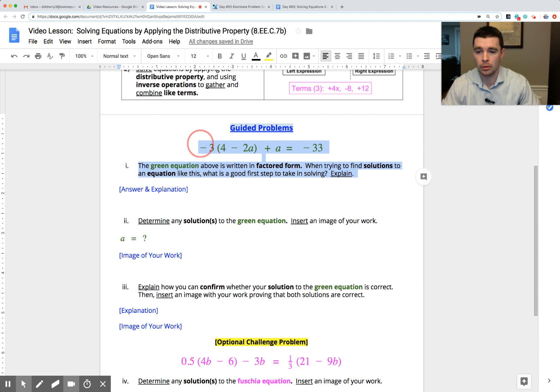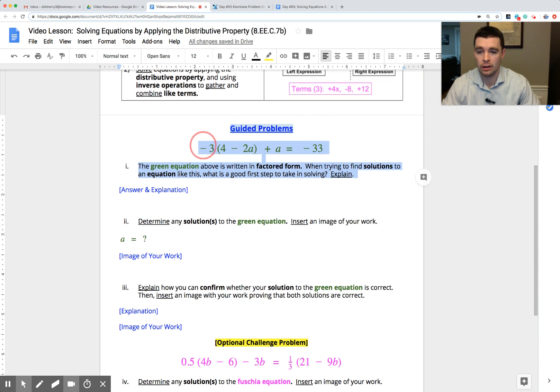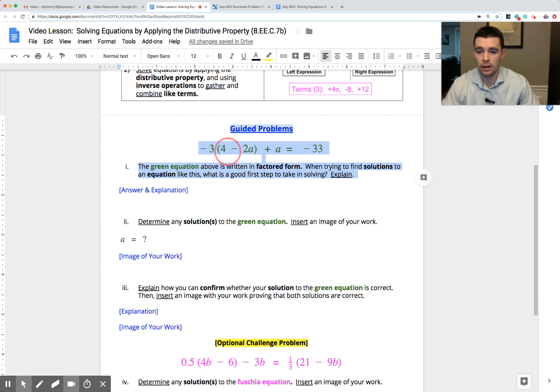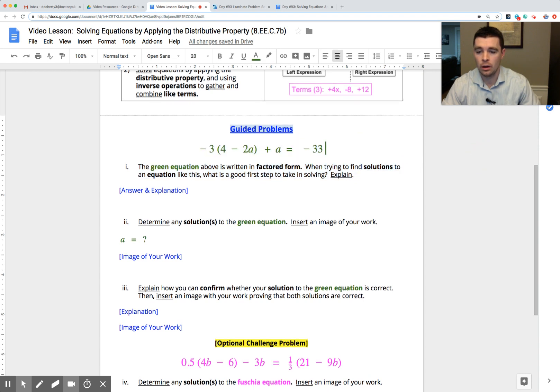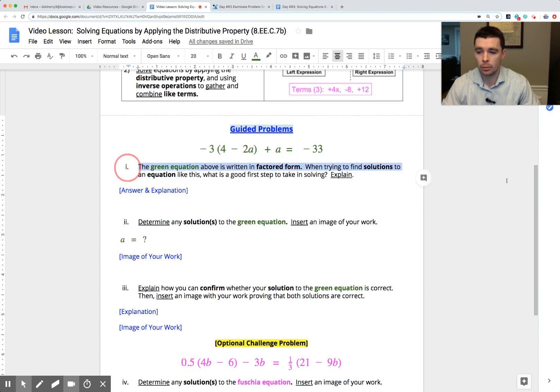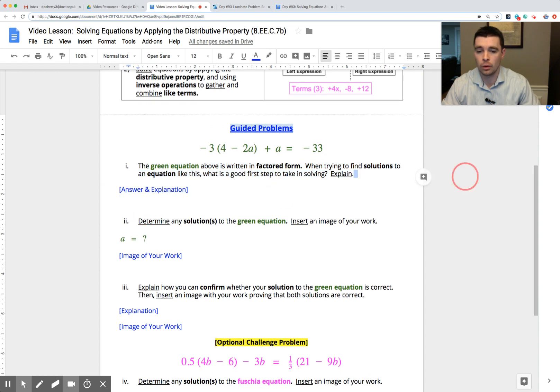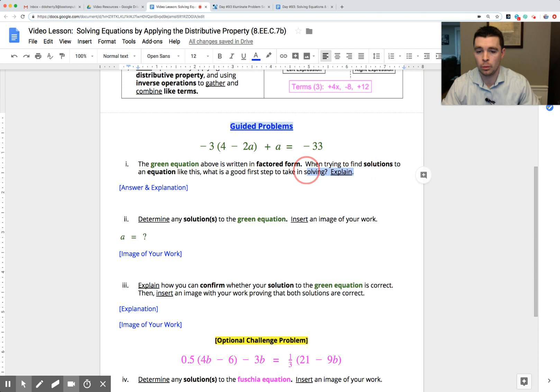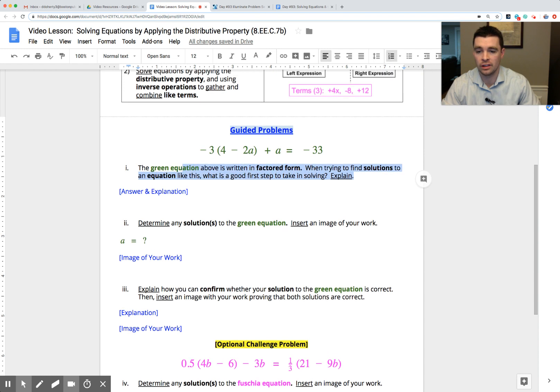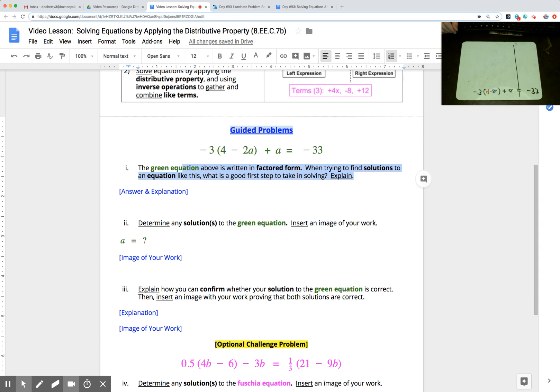So first problem today, a bit more complicated but we're ready for that: negative 3 times (4 minus 2a), two terms in factored form here, plus a equals negative 33. When you pause this video you're going to go through part 1 and part 2. Part 1 says the equation is written in factored form. When trying to find a solution, what would be a good first step for any of these factored form equations? And then for part 2 you're going to try to solve this equation out on your own.